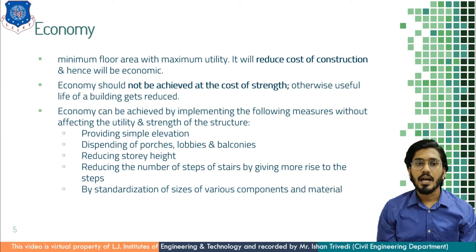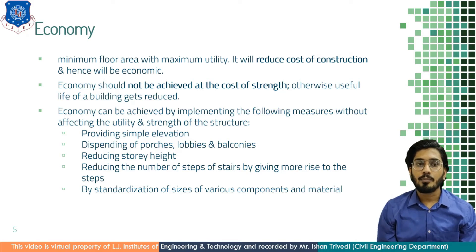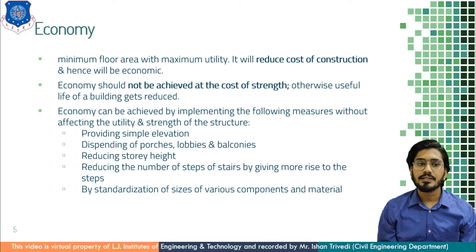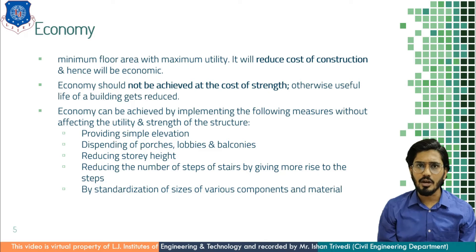Economy can be achieved by implementing few measures without affecting the utility and strength of a structure. These measures include providing simple elevation, dispensing with porch, lobbies and balconies, reducing the storey height. You can even reduce the number of steps of a stair by giving more rise to the steps. By standardization of size of various components and materials — this is how you can achieve economy in construction and while planning of a building.